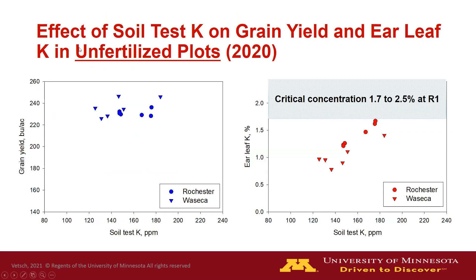Now looking at the unfertilized treatments in the same study — the effect of soil test K on grain yield in unfertilized plots. At the Rochester site, the yields are all on the same level even though there's a range in soil tests from maybe 150 up to 185 parts per million, with no yield differences. It's likely that the soil test level was above the critical value at Rochester in this year. At Waseca, the lower soil test levels around 120 to 135 parts per million generally saw somewhat lower yields than higher soil test levels, but only modest differences.